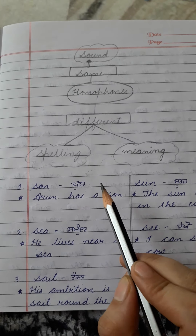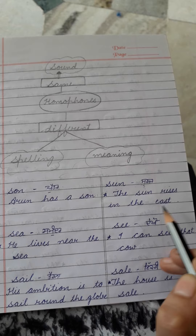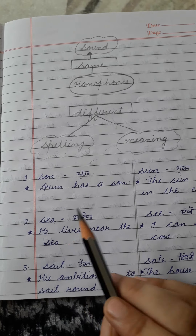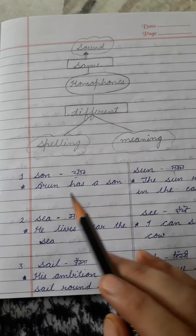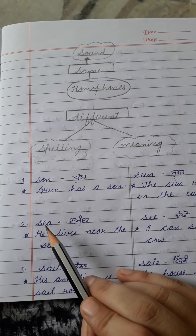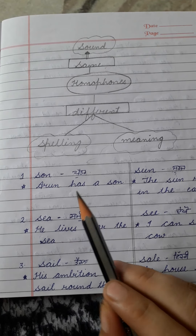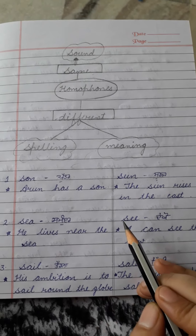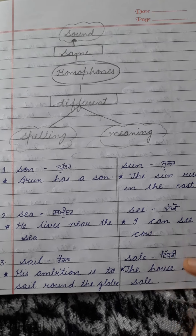Arun has a son. The sun rises in the east. The second one is S-E-A, 'sea', and S-E-E, 'see'. S-E-A means smoother (samundar). He lives near the sea. S-E-E means dekho (to see).